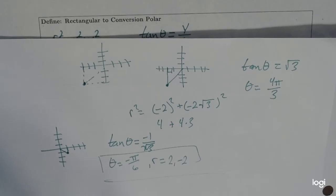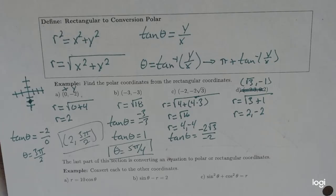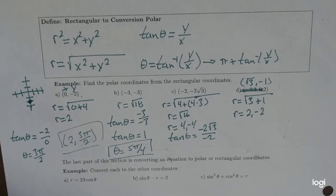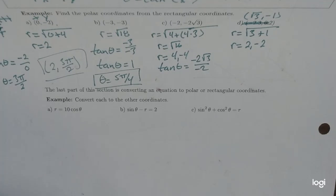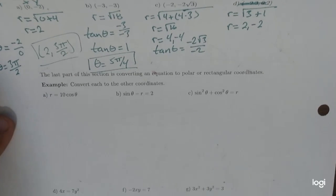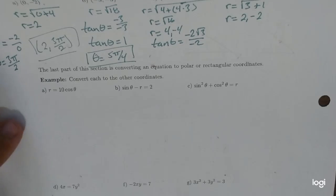Going backwards is a little difficult — it's just going to take your time to figure out what quadrant it's going to be in and things like that. Now the last part of this section is just going forward and backwards — conveying an equation to either polar or rectangular coordinates. This is pretty straightforward; it's just using the steps we did above to deal with it.